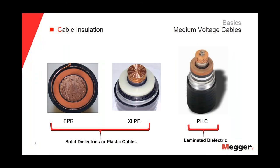In terms of the insulation of the cables, we have two types: solid dielectric or plastic insulation cables, also called polymeric insulation. We are seeing on the left the two most common polymeric insulations — EPR, ethylene propylene rubber, and XLPE, cross-linked polyethylene. On the right, we have the paper-insulated lead-covered cable, in which the insulation is paper impregnated in electrical oil.